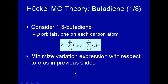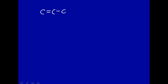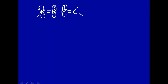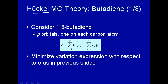Here we're going to apply the Huckel molecular orbital theory to an organic molecule, butadiene. Butadiene looks like this: C double bond C, C double bond C. If we put in the hydrogens, we see that each carbon atom is sp2 hybridized, leaving one atomic P orbital left over. These atomic P orbitals are parallel and perpendicular to the plane defined by the sp2 hybridization. There's butadiene, and we want to apply Huckel molecular orbital theory to this.